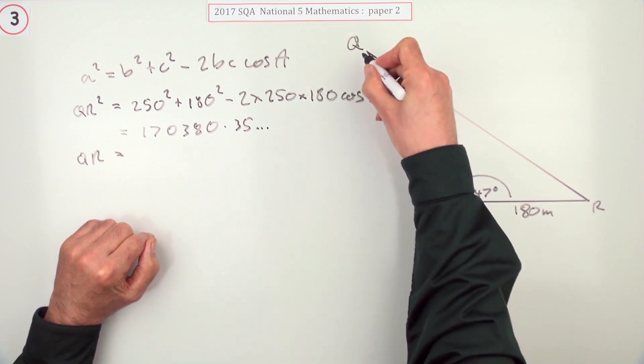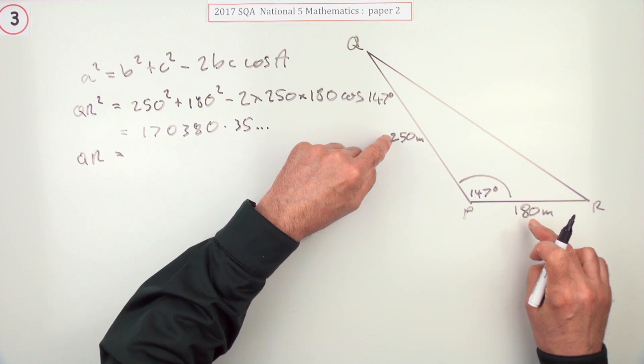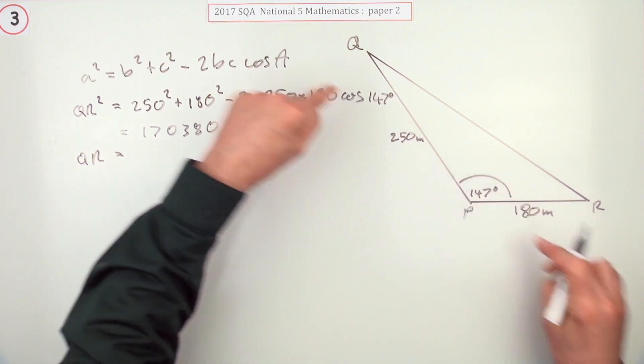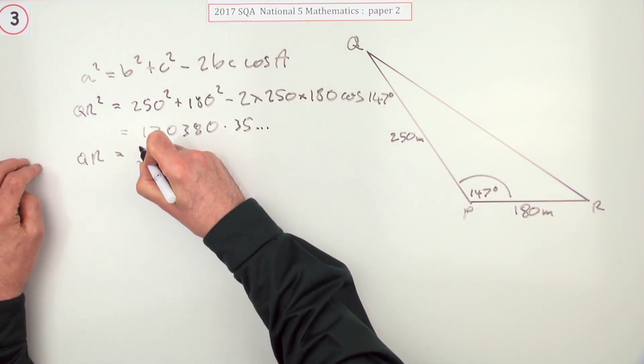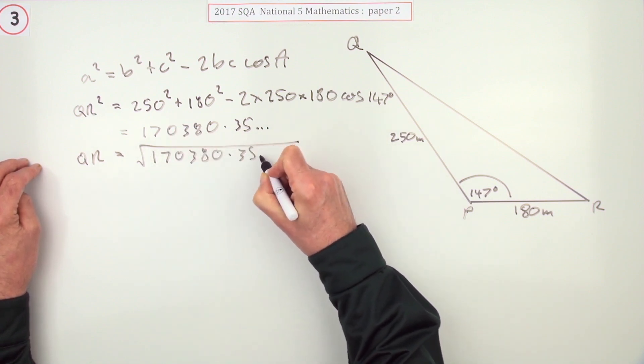The length of that side couldn't possibly be more than the sum of these two, or even equal to the sum of those two, because then it would just be a straight line. So QR is going to be the square root of this, which if you're brave you could just have put in all in one go.